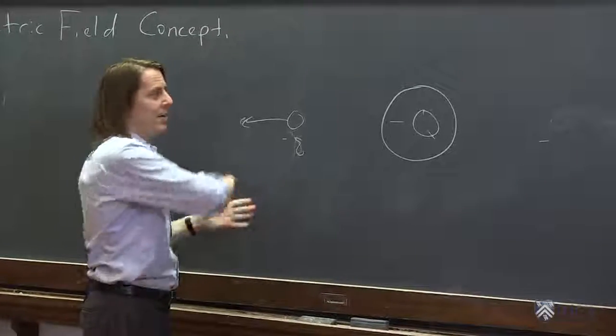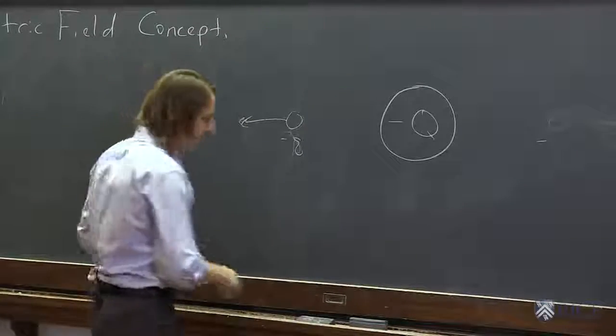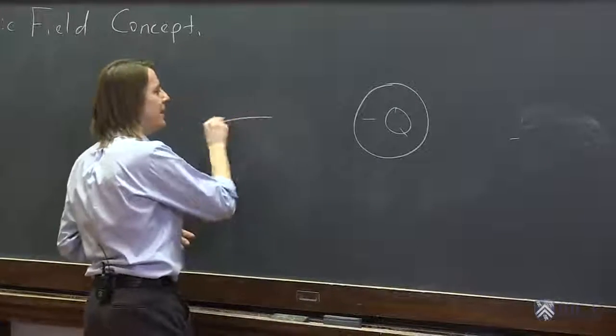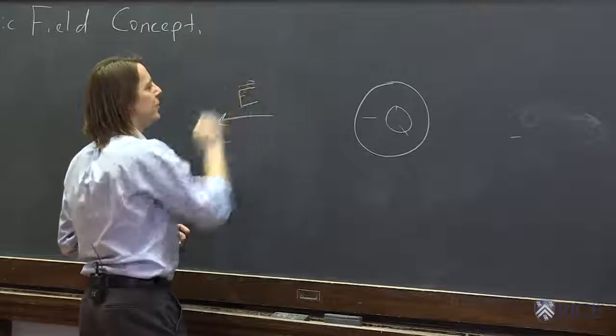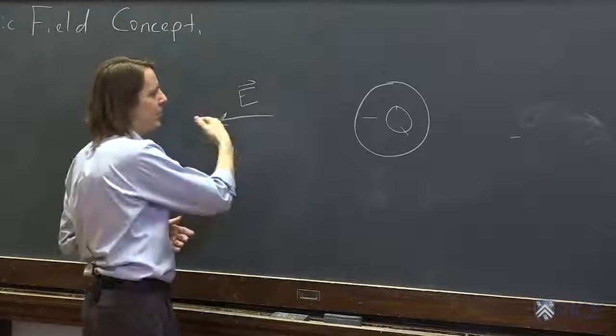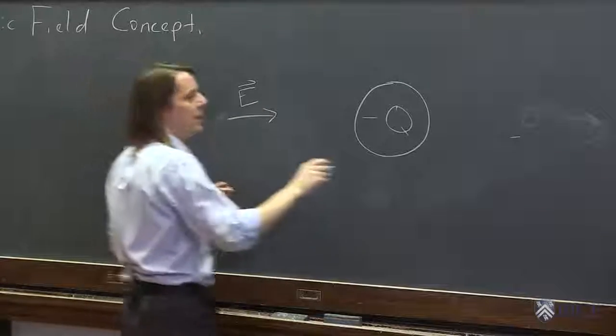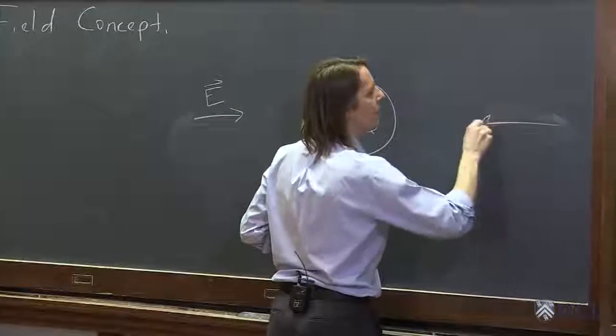It's just doing something everywhere. It's doing something everywhere in space. And what we say is, it's creating an electric field. It's creating this thing that is also a vector that we call the electric field. It points, in this case, it points this way. It points towards negative charges, and it points away from positive charges.